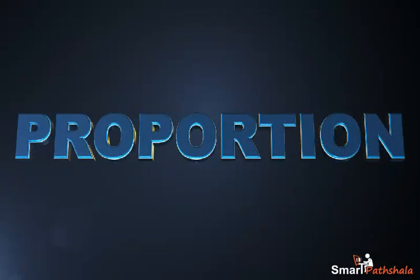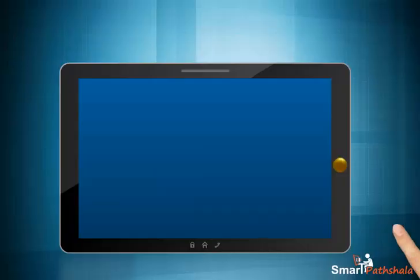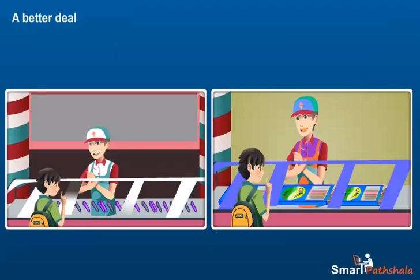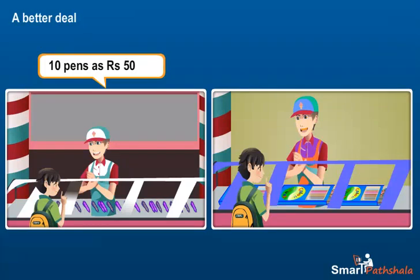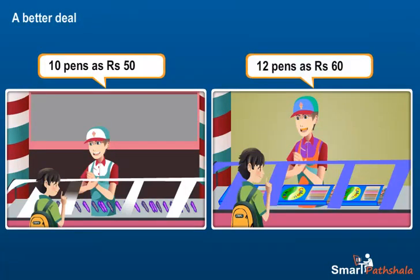Proportion. This module will explain the basics of proportion. One day Mohan went to the market to buy pens. There were two shops which had pens. One shop offered him 10 pens for rupees 50 and the other 12 pens for rupees 60.